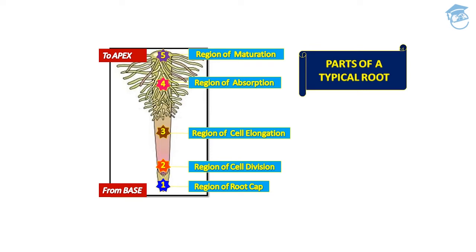The cells of elongation gradually differentiate and mature, and hence this zone proximal to the region of elongation is called the region of maturation. So these are the five regions of a typical root from base to apex.